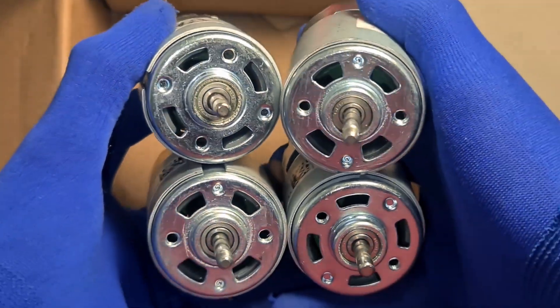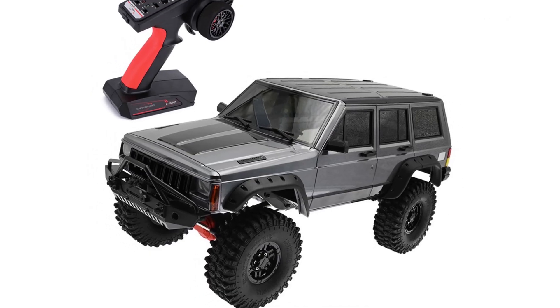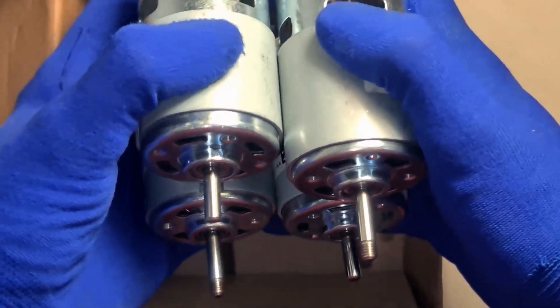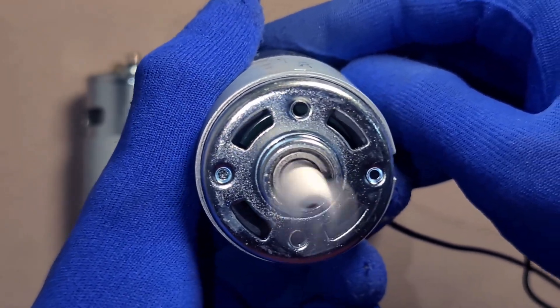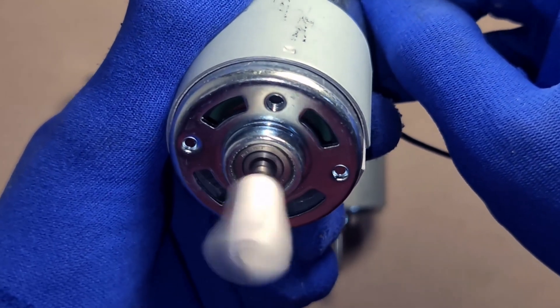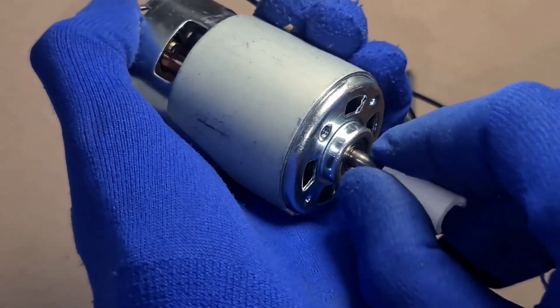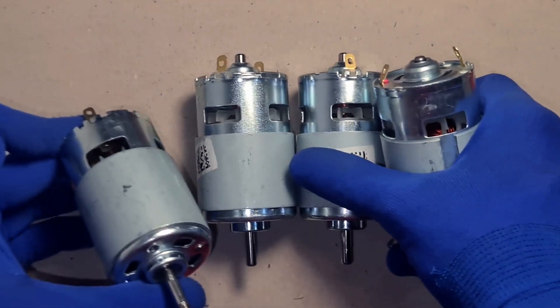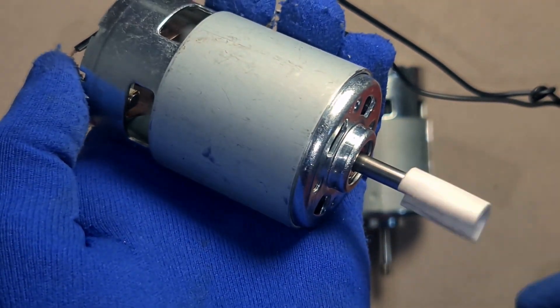These 775s are everywhere in DIY: CNCs, drill presses, RC projects, even some e-bikes. But not all motors perform the same. Here's what happens at just six volts. Both normal motors spin up smoothly. The threaded ones, not so much. One just hums. The other, well, it dreams about moving.